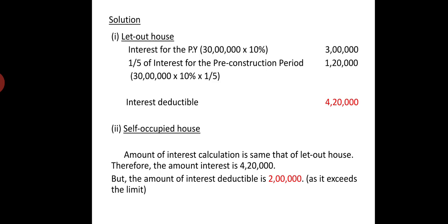We take one-fifth of the interest for the pre-construction period. Pre-construction period is two years as specified. That is Rs. 30 lakhs at 10% — the calculation involves the pre-construction period interest.